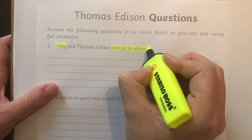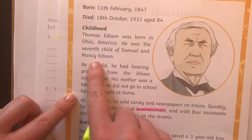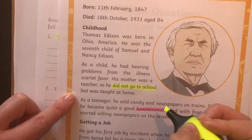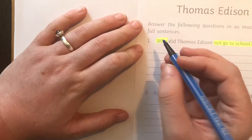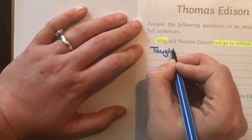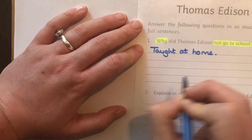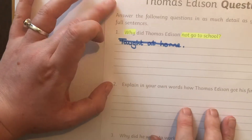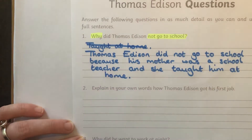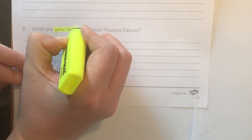Then read the questions carefully and highlight key words. Scan the text for the key words and highlight the information that will help you answer the question. Remember, encourage your child to answer questions in full sentences — this allows them to put in lots more information and give evidence for their answer.